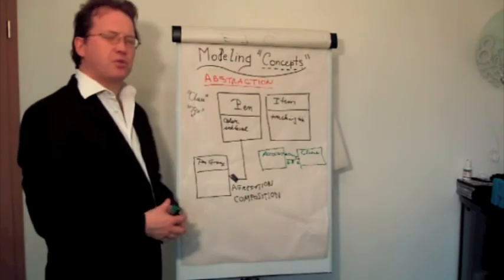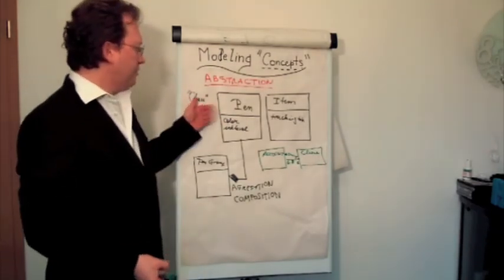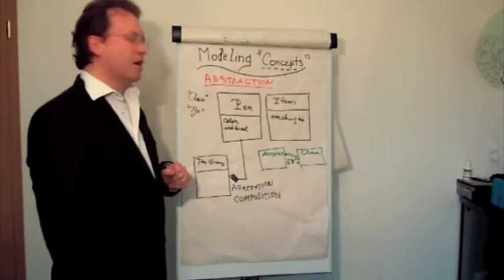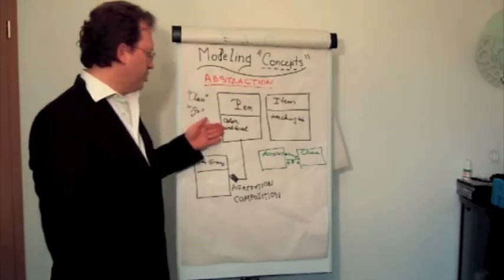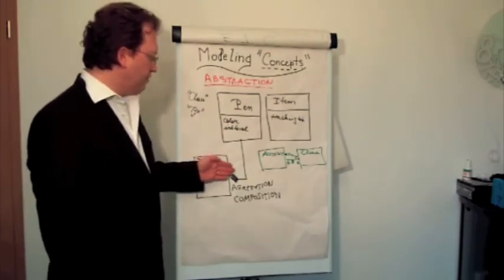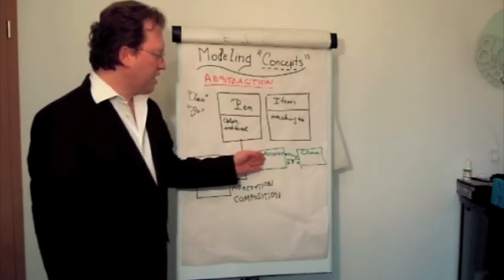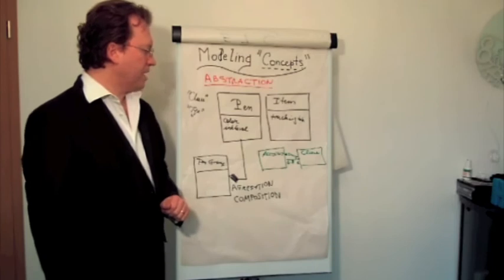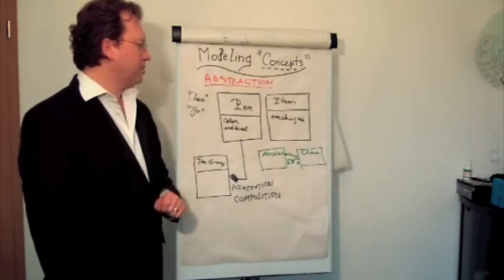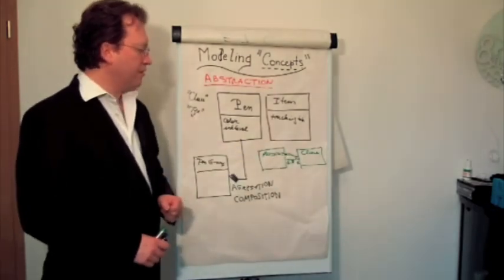So you see, for modeling concepts, we have multiple elements. We may have the concept itself, like a class here. We have characteristics that are interesting for us, which are attributes. And we have relationships. For example, a pen group composed of pen. Or an account being owned by a client. A client owning multiple accounts.